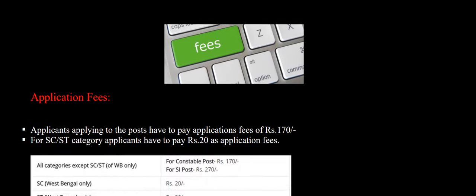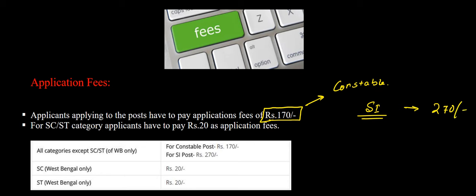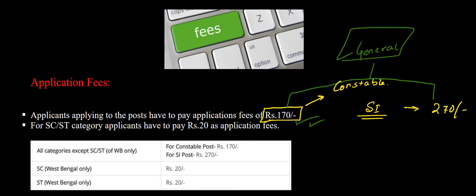Now let us go through the application fees. For the constable post the application fee is ₹170, and for the sub-inspector post the fee is ₹270 — ₹100 extra. These fees are for general category students. For SC/ST and other reserved categories, the fee is only ₹20, whether for constable or sub-inspector post.